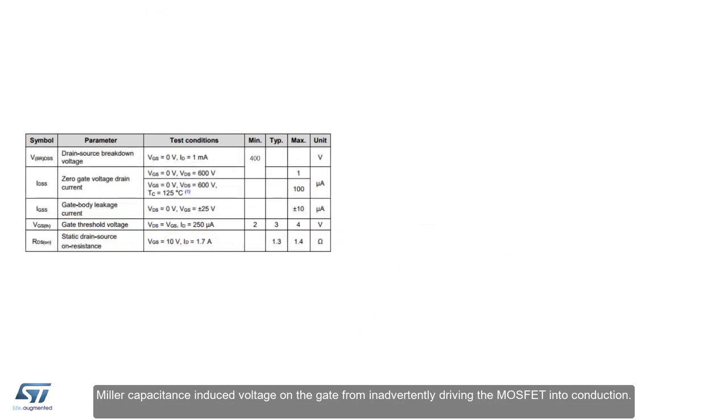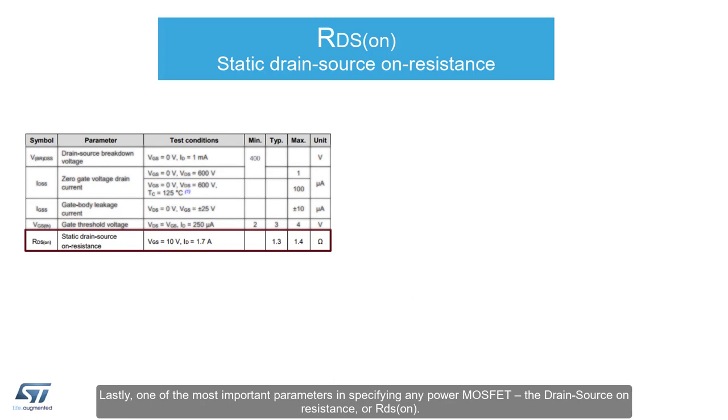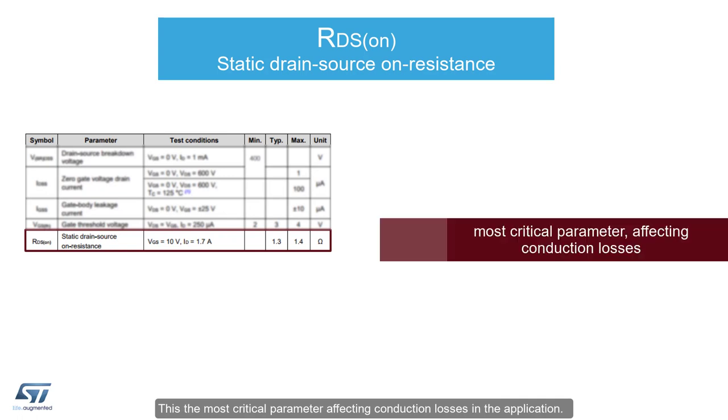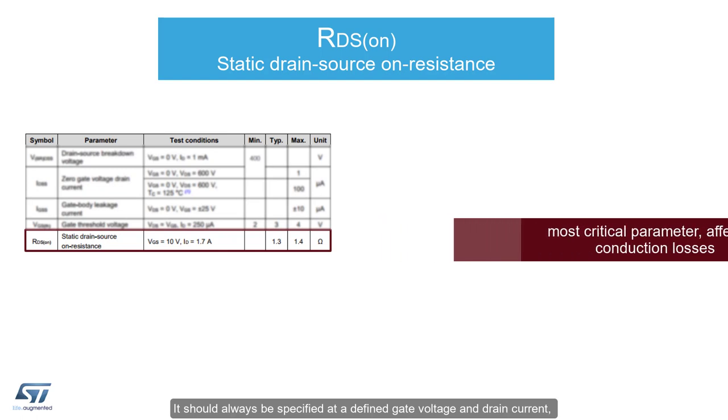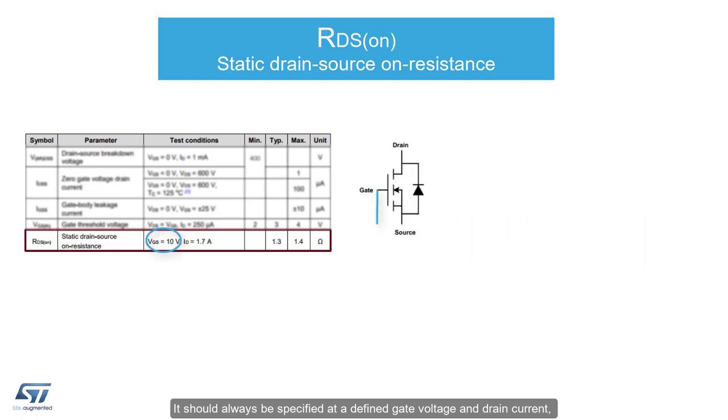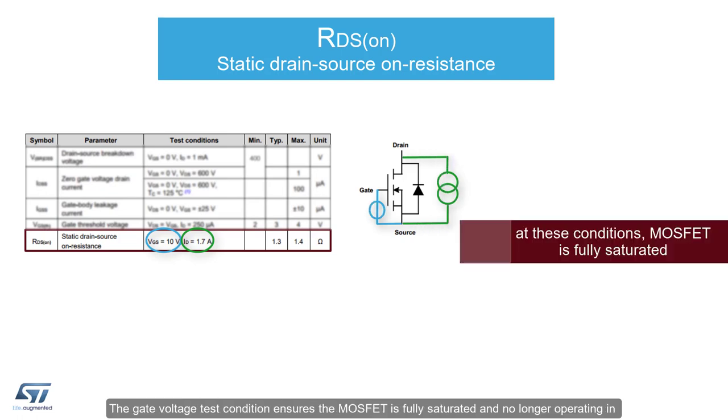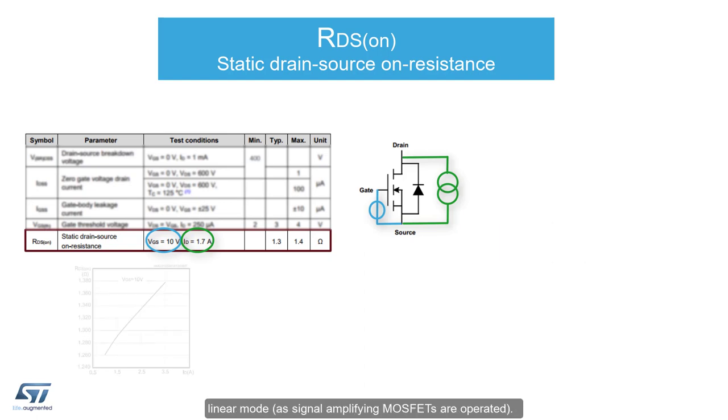Lastly, one of the most important parameters in specifying any power MOSFET, the drain source ON resistance, or RDS-ON. This is the most critical parameter affecting conduction losses in the application. It should always be specified at a defined gate voltage and drain current, as well as with a defined maximum at 25C. The gate voltage test condition ensures the MOSFET is fully saturated and no longer operating in linear mode, as signal-amplifying MOSFETs are operated.